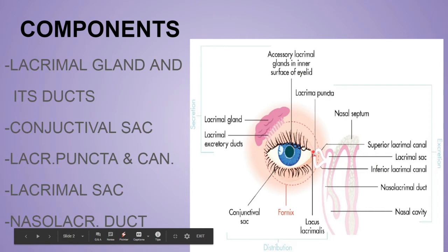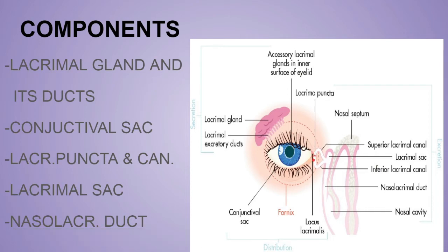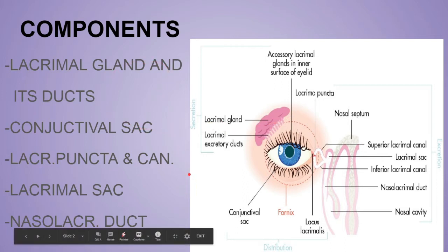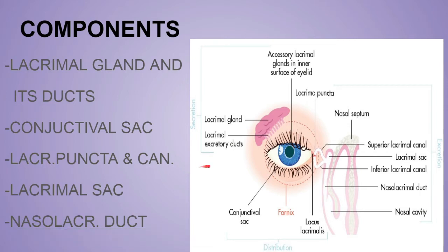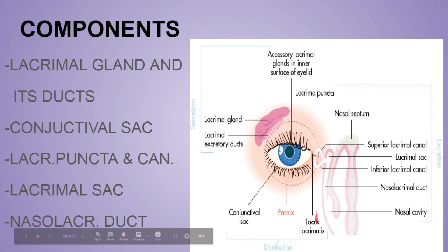Over here on the medial part you will see small lacrimal puncta. These are the lacrimal glands. This is the lacrimal puncta, and these two canals are the lacrimal canaliculi going from the lacrimal puncta. The lacrimal canaliculi drain into the lacrimal sac, and then the nasolacrimal duct opens finally into the nasal cavity.